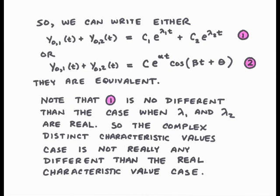So we can write either y01 of t plus y02 of t equals c1 e to the lambda 1 t plus c2 e to the lambda 2 t, or we can write y01 of t plus y02 of t equals c e to the alpha t cosine of beta t plus theta. These two forms are equivalent. The first is no different than the case we had before when lambda 1 and lambda 2 are real. So the complex distinct characteristic value case is really not any different than what we studied in our last lecture.